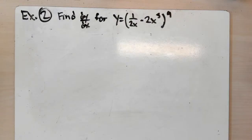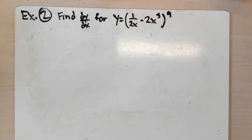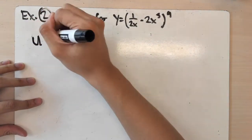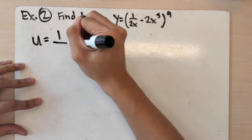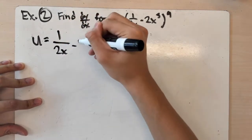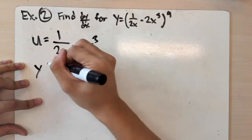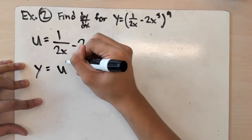For the second example, we have to find the derivative of y equals (1 over 2x minus 2x cubed) to the ninth power. Pause the video and try it yourself. We apply the same strategy: let the inner function u equal 1 over 2x minus 2x cubed, and let the outer function y equal u to the ninth.